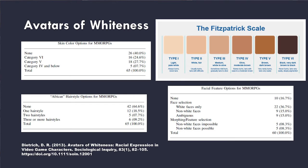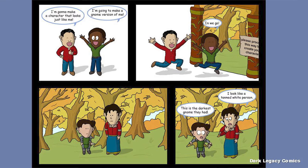Even within systems built for flexibility, there still seems to be a bias for white avatars. In Dietrich's paper Avatars of Whiteness, looking at 65 MMORPGs and about 20 single-player role-playing games, the majority of characters were lighter skinned. There were very few African or textured hairstyles available, and facial features were prominently Caucasian. In every single game they looked at, white male was the default character option. Players of color will often end up where the closest they can get to representing themselves is a tanned white character.